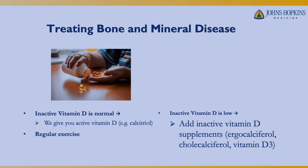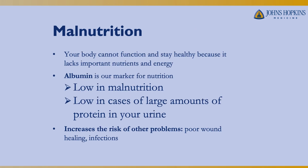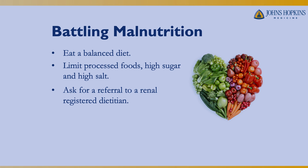Malnutrition can be a complication of kidney disease. People struggle with dietary changes, especially if they have additional restrictions from other health issues. When someone is malnourished, they can't function as well or stay healthy. We use an albumin level in blood tests to screen for malnutrition. A low albumin can mean insufficient protein intake or losing a lot of protein in the urine. Malnutrition increases risk of infection, decreases ability to heal, and decreases muscle mass. We address this through a balanced diet, limiting processed, high-sugar, and high-salt foods, and working with renal dietitians.